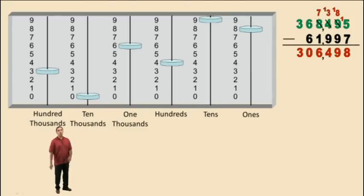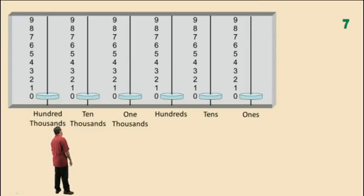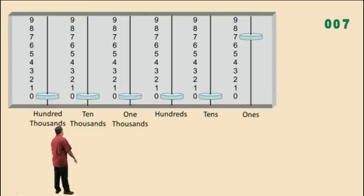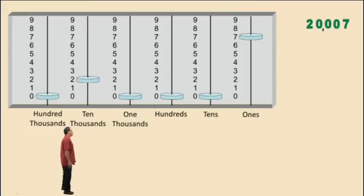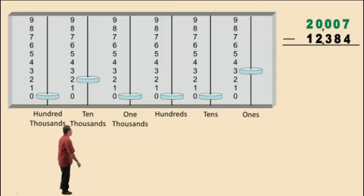Let's do one more problem. Let's enter 7 ones, 0 tens, 0 hundreds, 0 thousands, 2 ten-thousands. And let's now subtract 12,384. We'll start with the ones column: 7 subtract 4, no problems — we get 3.